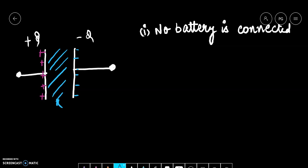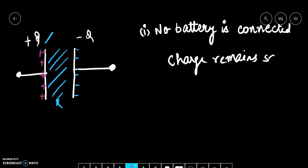In Case 1, when the battery is not connected, the voltage across the plates may change, but the charge on the plates will not change. Because there is no source from which charge can be extracted or removed — we have no external source to increase or decrease the charge on the plates. That's why, when we insert the dielectric without a battery connected, the quantity that remains constant is the charge. So we will use the formula Q² upon 2C to calculate the energy change.